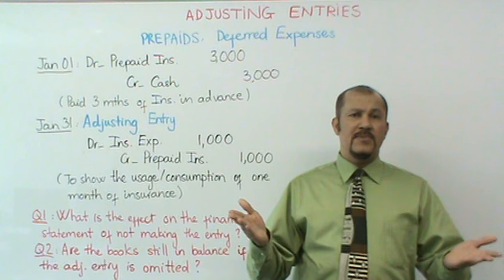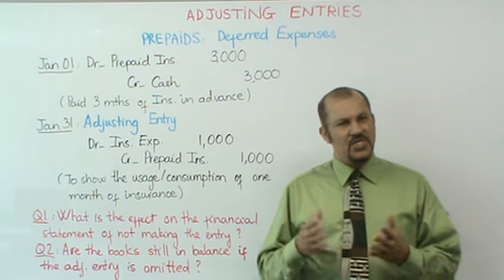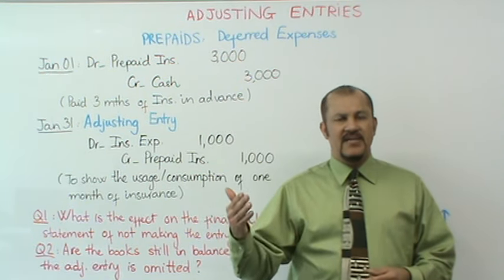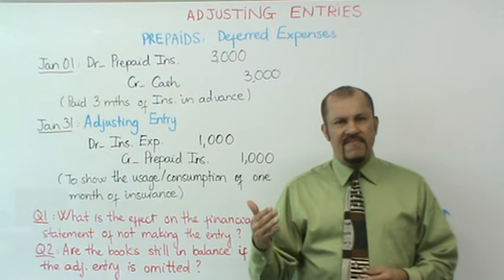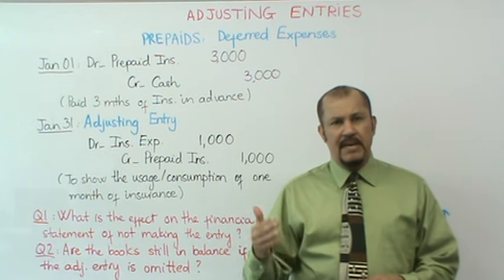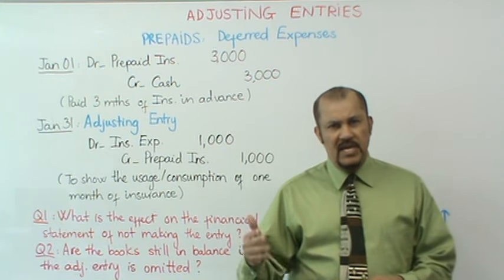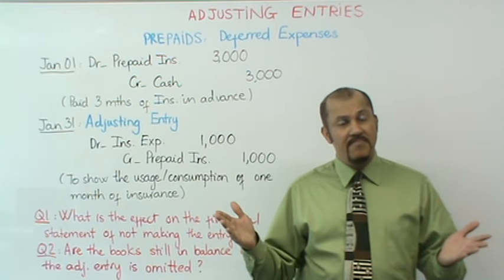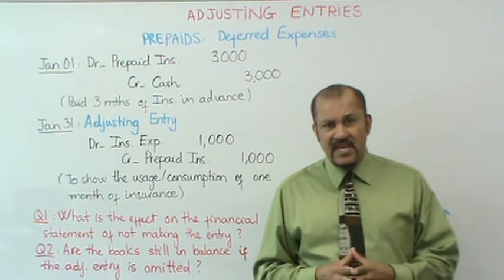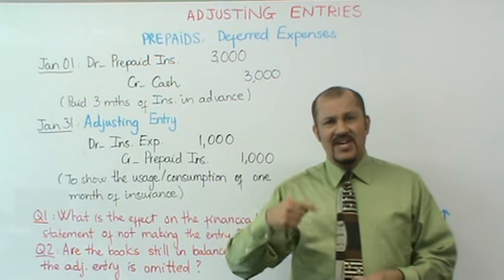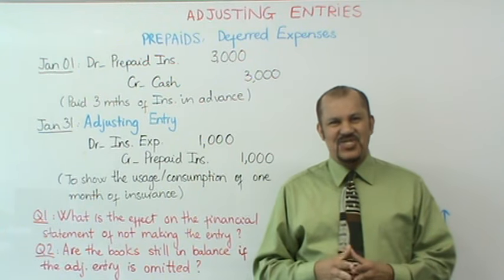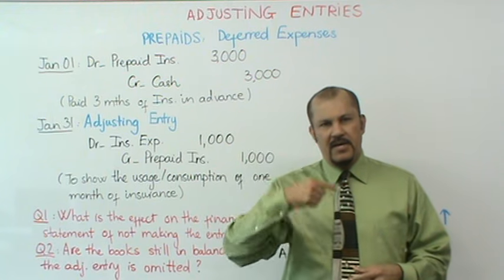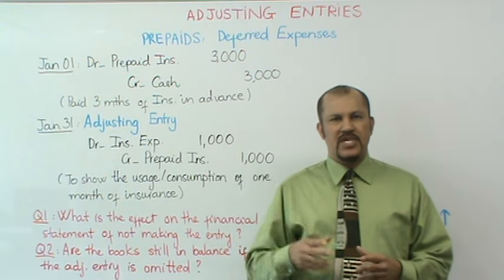What happens on April 1st? You start the whole process again by writing a check for the next three months — April, May, and June — and repeat the cycle. That's why accountants will always have a job; we do the same things in a repetitive fashion.